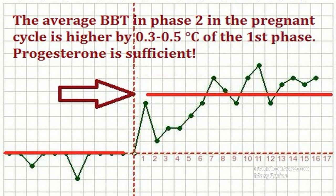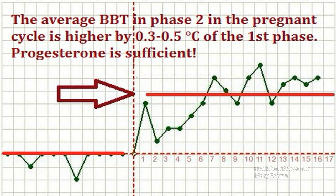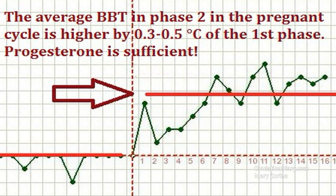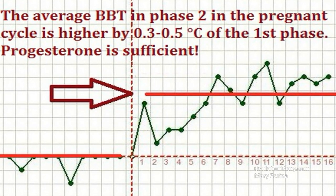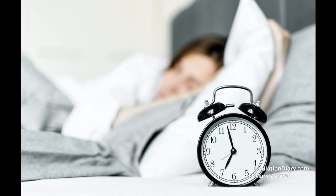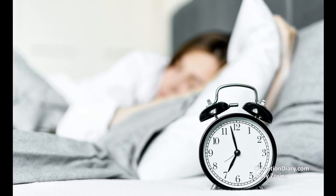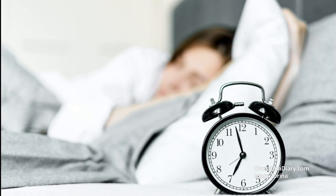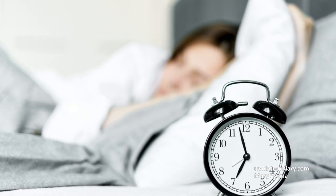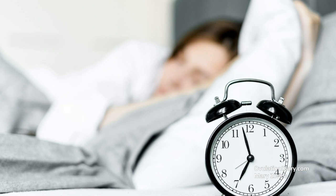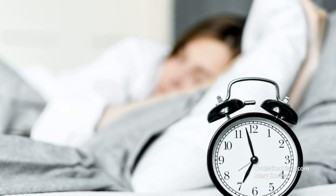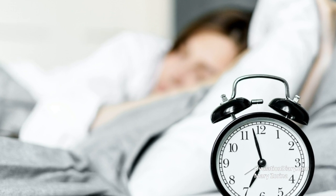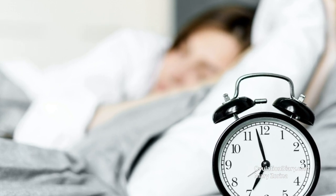The required difference is 0.3 to 0.5°C (0.54 to 0.9°F). To obtain the most accurate results not distorted by external factors, you need to follow a few simple measurement rules: use the same thermometer, measure at the same time, and ensure three to six hours of sound sleep before measurement.